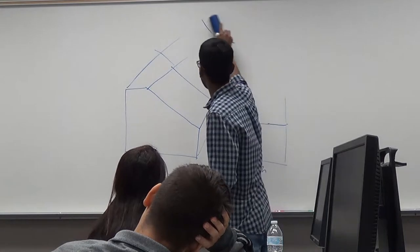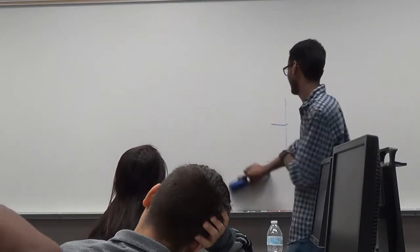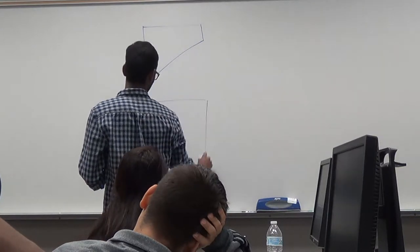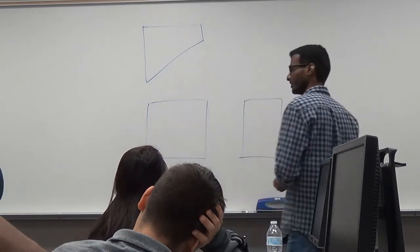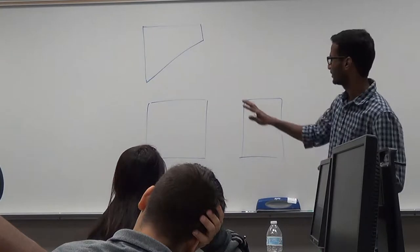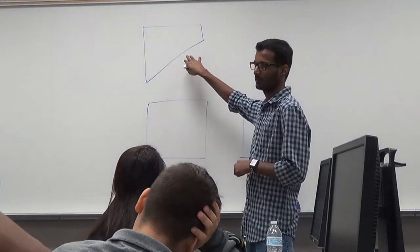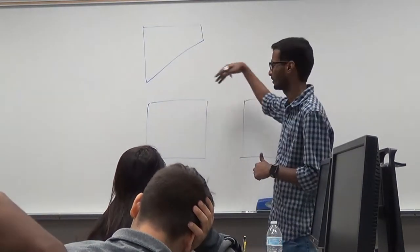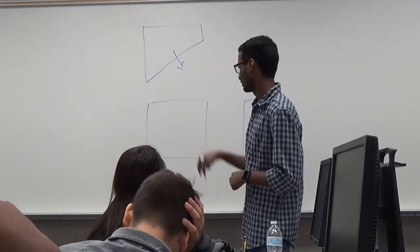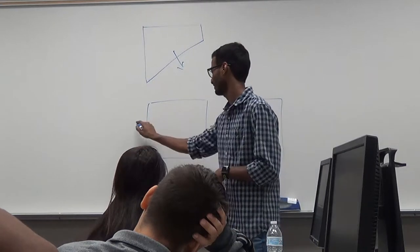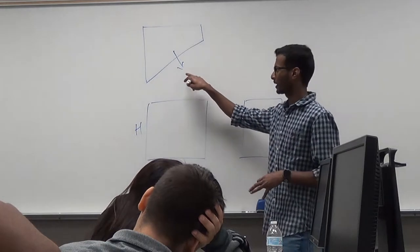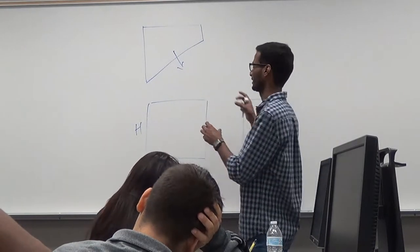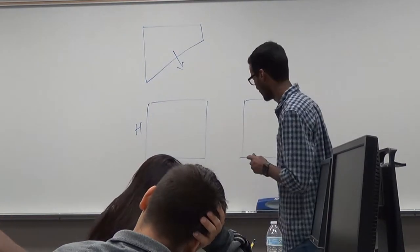The second case is if you want to sketch an auxiliary view from the top view. If I have an inclined edge on my top view, I would use that inclined edge to show the true size and shape of that inclined surface in my auxiliary view. The height is common between the front and side views. So if I am trying to draw an auxiliary view projected from the top view, then I would have my height projected or taken from those two views and used in my auxiliary view.